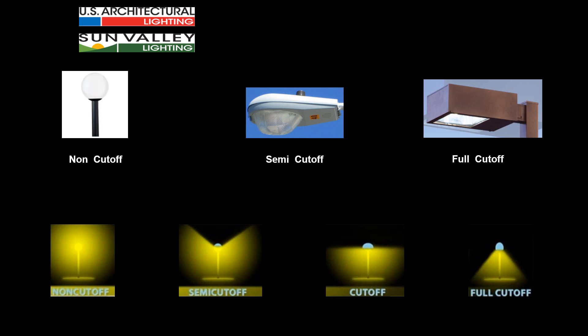Cutoff luminaires are a little bit different than full cutoff in that they acknowledge a certain amount of light may come off the luminaire in an upward direction as a result of the structure of the luminaire. For example, a post-top luminaire may have light bouncing off its structural elements in an upward direction. A full cutoff luminaire says none of that is allowed — everything is to go straight down. These ratings — full cutoff, cutoff, and semi-cutoff — all relate back to the percentage of the specified output of an HID lamp.